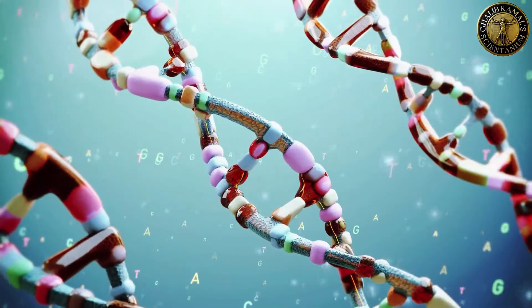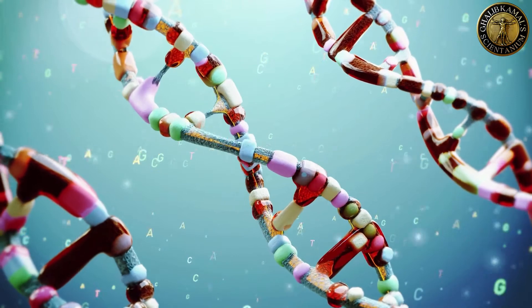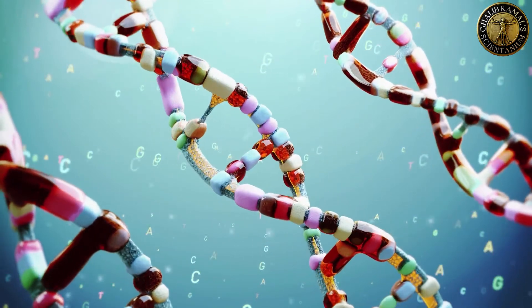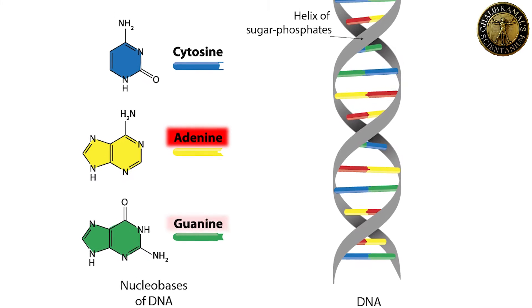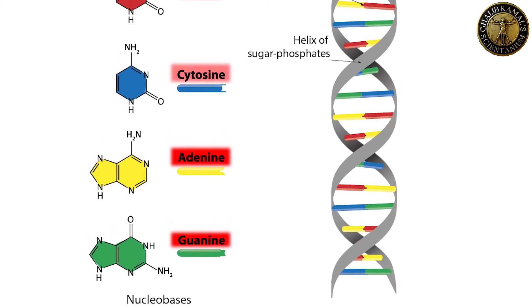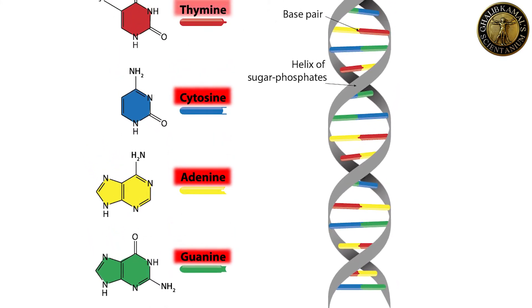The information in DNA is stored as a code made up of four chemical bases: adenine as A, guanine as G, cytosine as C, and thymine as T.